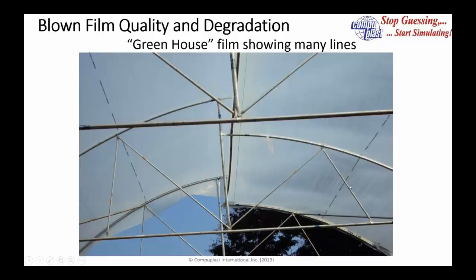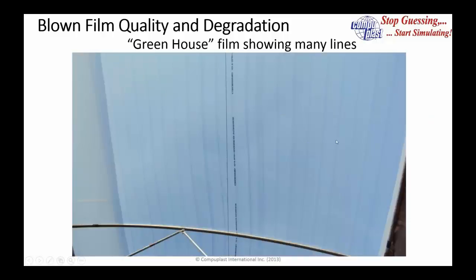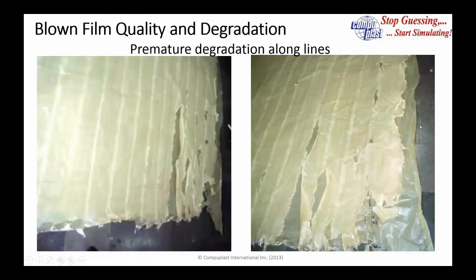In reality this would look something like this — here you see a greenhouse film which shows many lines in the product. A closer view shows lines appearing on the final product; obviously this die had many more spirals. The result was that the material would have premature degradation along these lines. They put additive in to break down the film, and as you can see, degradation of the material would happen more along those lines after some period of time.